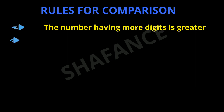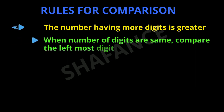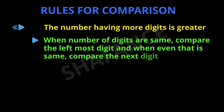The second rule is: when the number of digits are the same, compare the leftmost digits, and when even that is the same, compare the next digit from the left. So if two numbers have the same number of digits, we compare the leftmost digits of both numbers, and if that is also the same, we move to the next digit from the left.